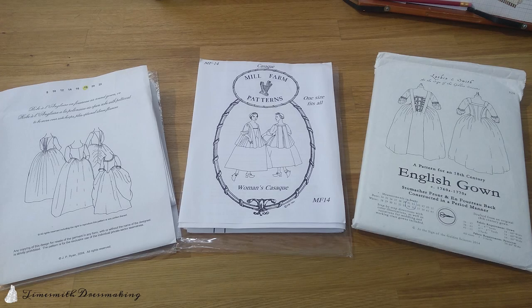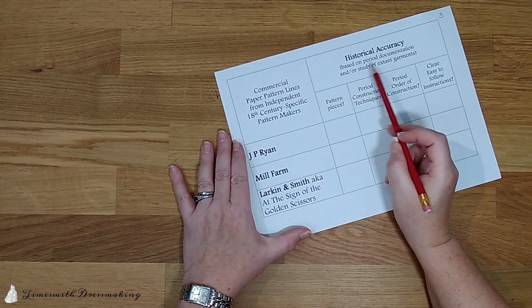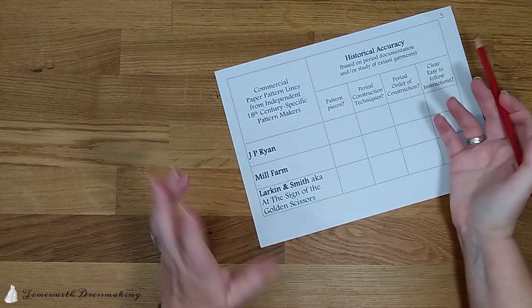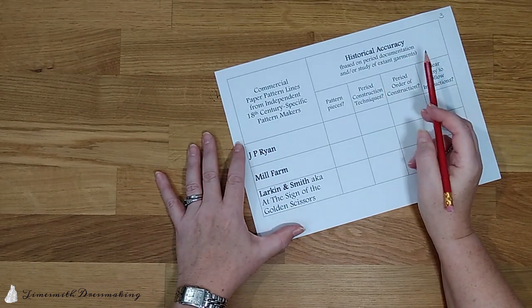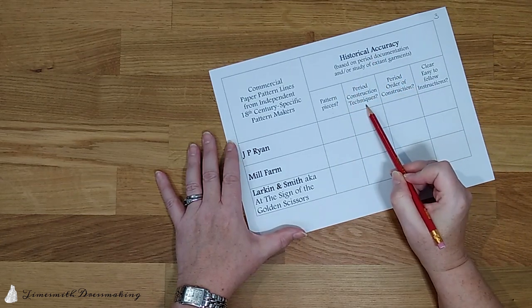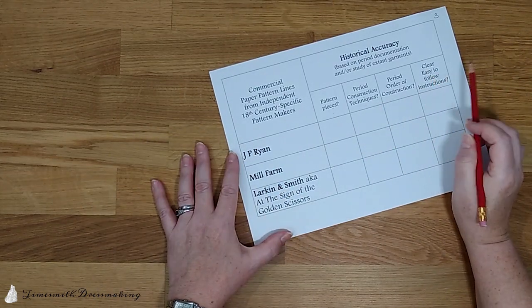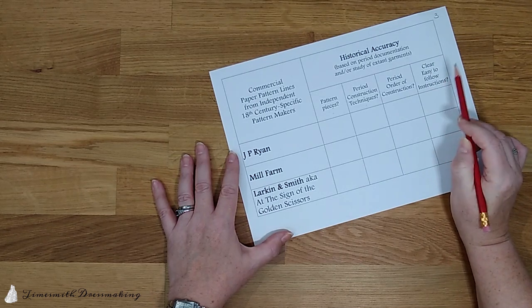We're now going to look at these three pattern lines with some examples by reference to just a few of the patterns that I have from each of them in some detail to see their pros and cons and what might be the most suitable for you. So for each of these three pattern lines, we're going to look at some examples and have a think about historical accuracy based on period documentation and or the study of extant garments that may have been made. We'll look at how historically accurate the pattern pieces are, the construction techniques, the order of construction, and whether the instructions are clear and easy to follow, which would make them suitable for beginners.